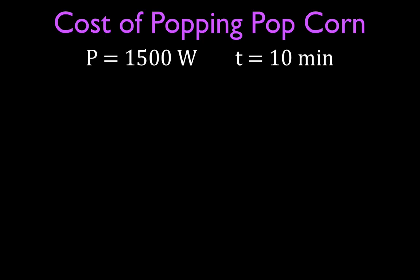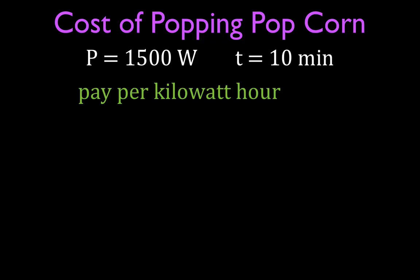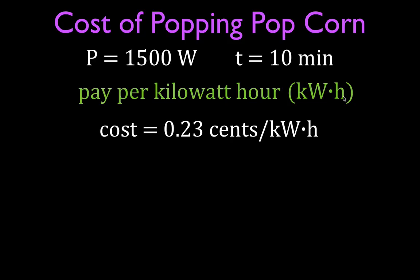When you pay for electricity, you don't really pay for power — you pay per kilowatt hour, which is often abbreviated as kWh: kW for kilowatt, h for hour. You figure out how many kilowatts and multiply that times the number of hours. It's kilowatt hours, not kilowatts per hour. We're going to say we pay 23 cents per kilowatt hour — so one kilowatt used for one hour costs 23 cents.